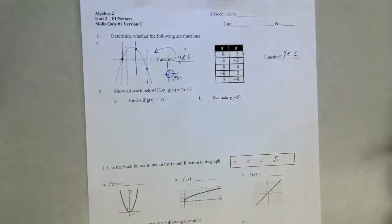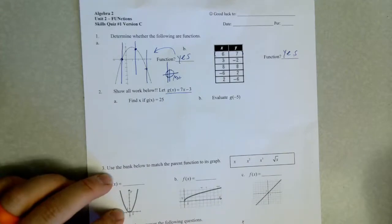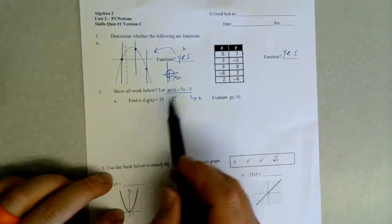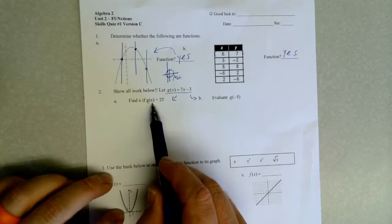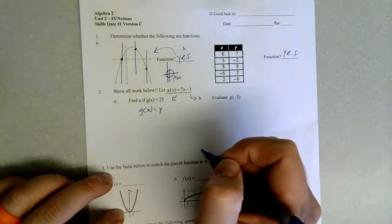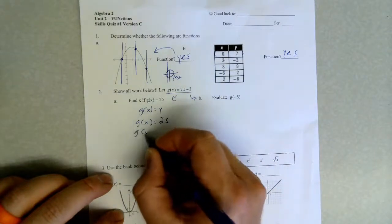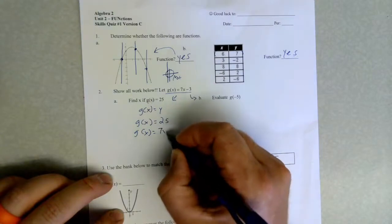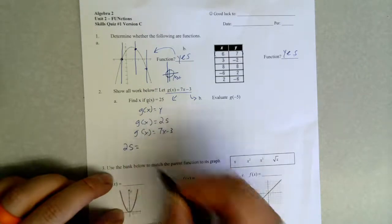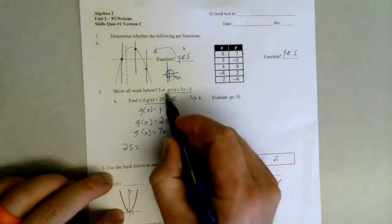All right, moving on. We are evaluating functions. There's two different types here. We have just one single function: g(x) = 7x - 3. There's two different ways that we can interpret this function. One is g(x) = 25. Whenever there's no numerical value inside the parentheses, that basically means g(x) equals y. g(x) = 25, and this means that g(x) also from up here equals 7x - 3.